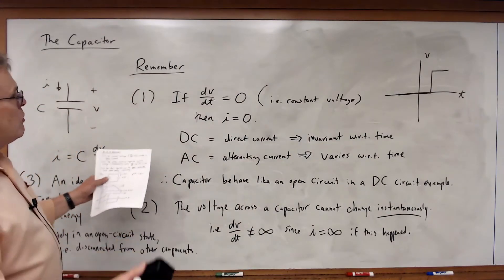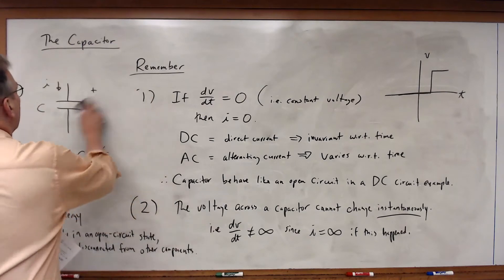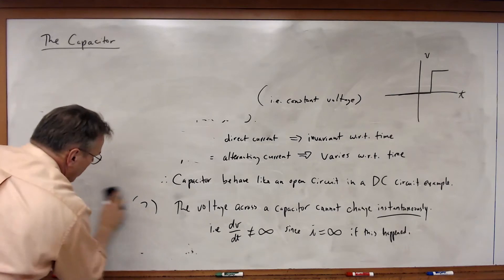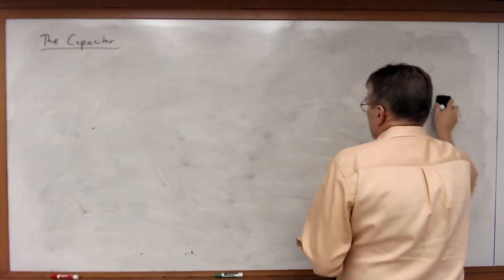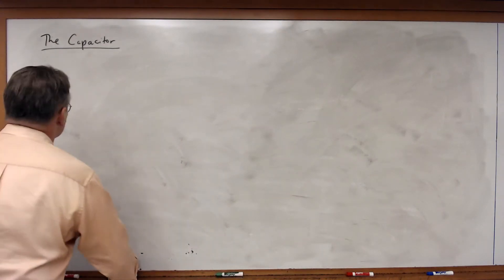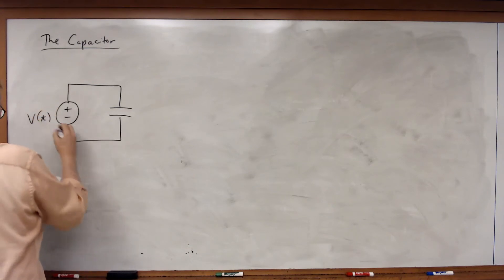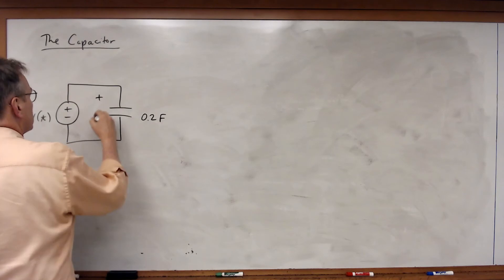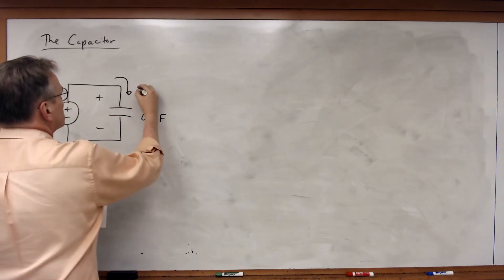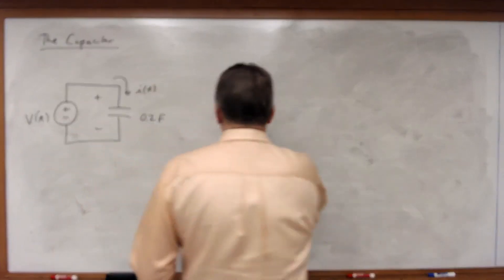Now let's look at an example, having looked at the characteristics of a capacitor. Let's do a simple circuit example to put all these things together — voltage, current, power, energy. In this case, we're going to take a voltage source and connect it across the capacitor. Let's say this capacitor has a value of 0.2 farads. The voltage across the source is also the voltage across the capacitor, and by the passive sign convention, this will be the direction of the current in that capacitor. Let's assume that this voltage is a time-varying voltage, and I'm going to draw a plot of what that voltage looks like.